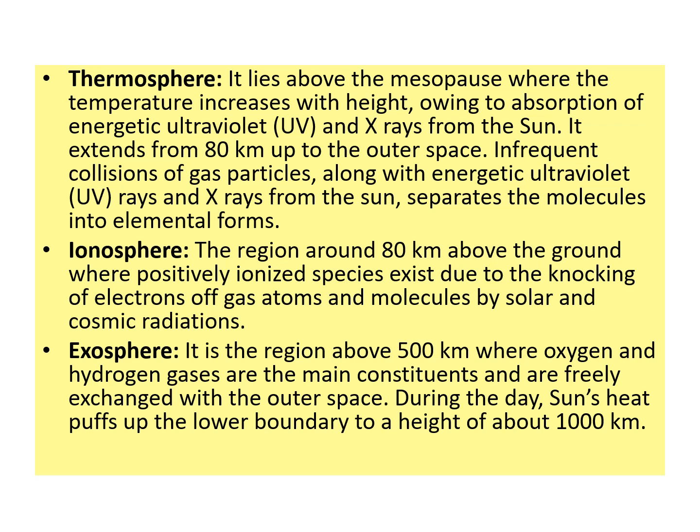The exosphere is the region above 500 km above the ground, where oxygen and hydrogen gases are the main constituents, and it is constantly being exchanged with outer space. When there is solar radiation during the day, it puffs up to about 1,000 km, and when there is less sunlight, it contracts. Both the ionosphere and exosphere do not have any specific boundaries.